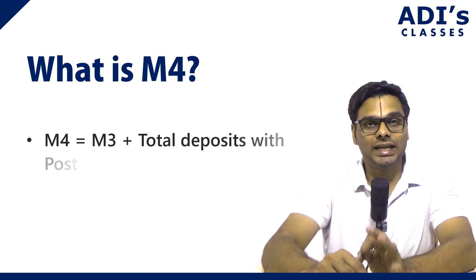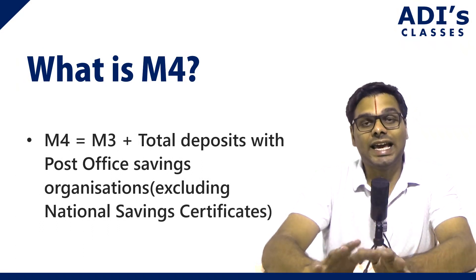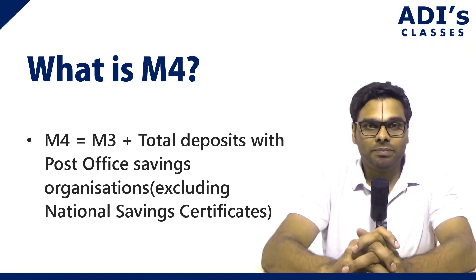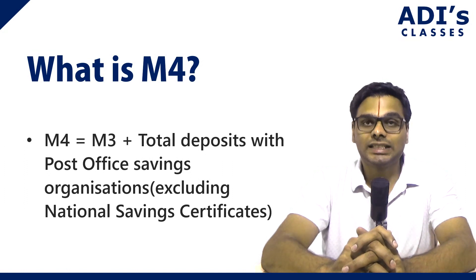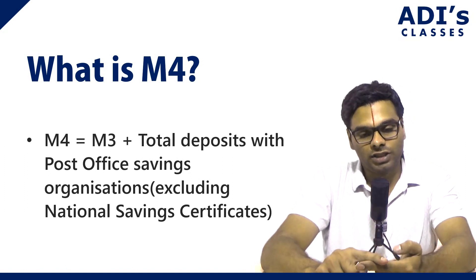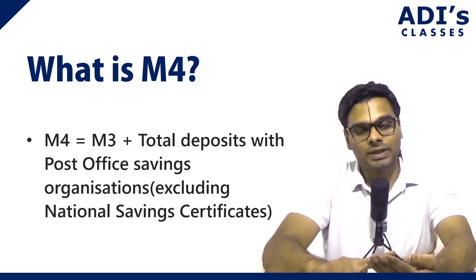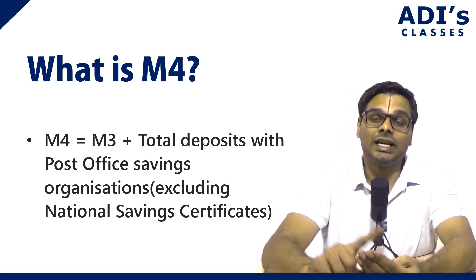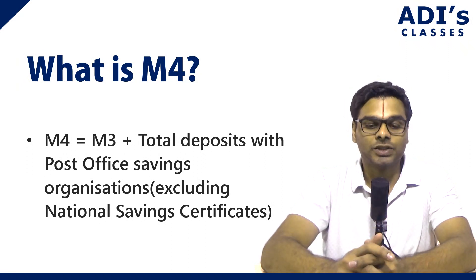M4 is equal to M3 plus total deposits with post office savings organizations, excluding national savings certificates. So M4 equals currency held by the public plus net demand deposits held by the bank plus net time deposits held by the bank plus total deposits with post office savings organizations, excluding national savings certificates.